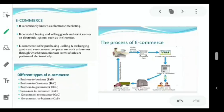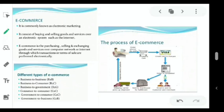Depending upon the type of business conducted over the network, there are different types. First is B2B, that is Business to Business. Communication happens between businesses. In Flipkart, some sellers are there — sellers have a business and Flipkart also has a business, and they are communicating, selling and buying products. That is an example of B2B.